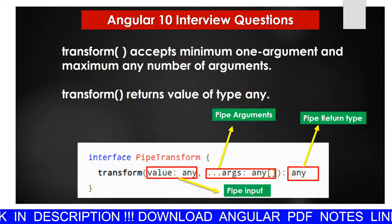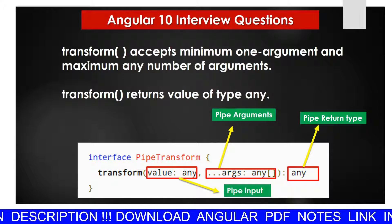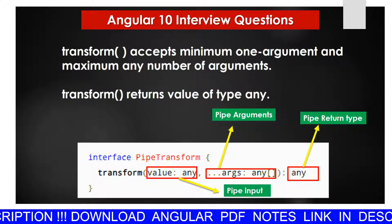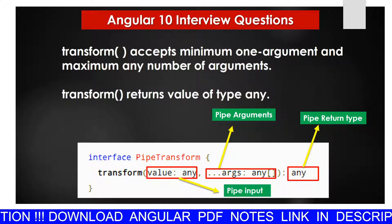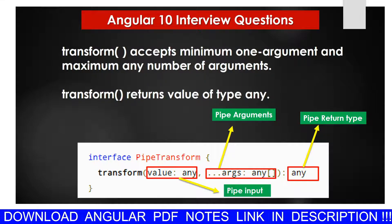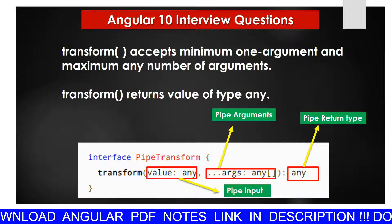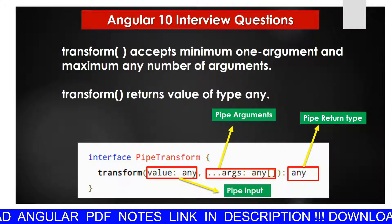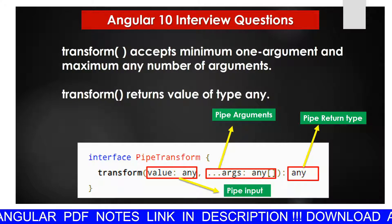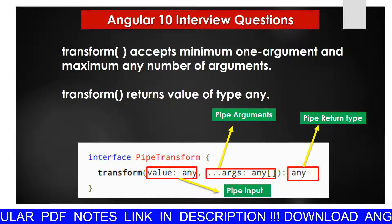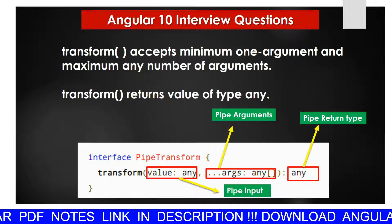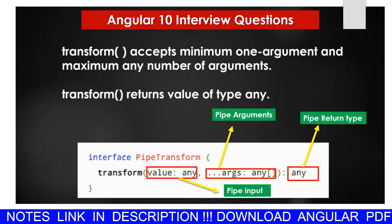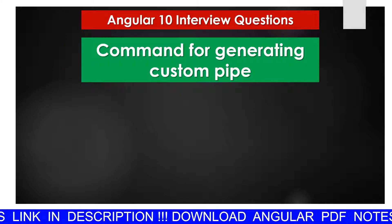Next question: what is the transform method? The transform method accepts a minimum of one argument and a maximum of any number of arguments. The transform method returns a value of type 'any', as you can see with its two parameters and one return type.